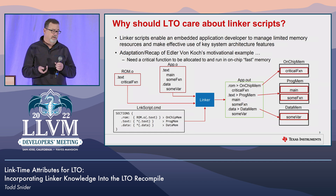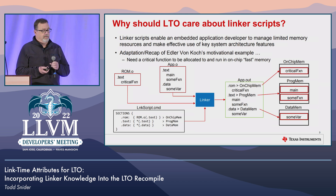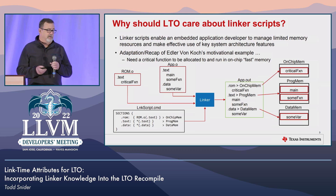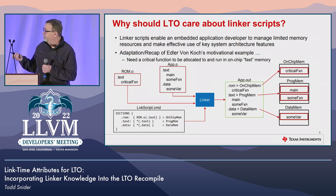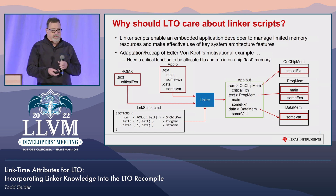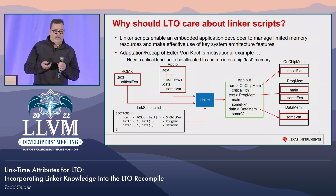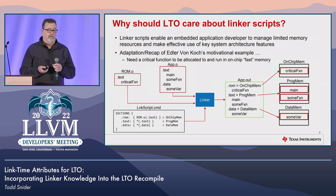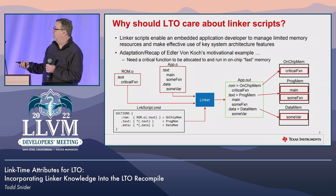Let's take a look at an example of a non-LTO link where we have two input object files combined with a linker script that feed into the linker, and the output is an executable file. As you can see, the placement of the critical function is dictated by the linker script — it is collected into the ROM output section, and so it goes into the right place in memory.